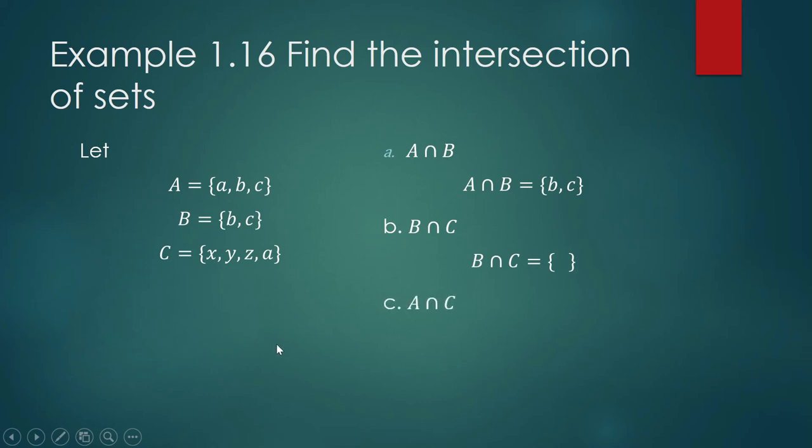How about A intersection C? A, and these are the elements. C, these are the elements. What is common to A and C? It is A. So A intersection C is equal to this set. Again, you don't just write equal to A. You will write it with the pair of braces.